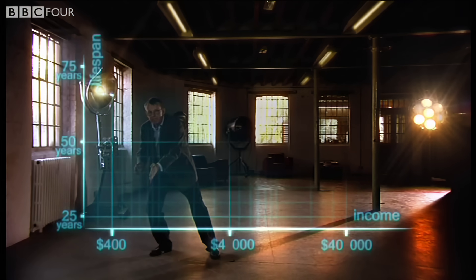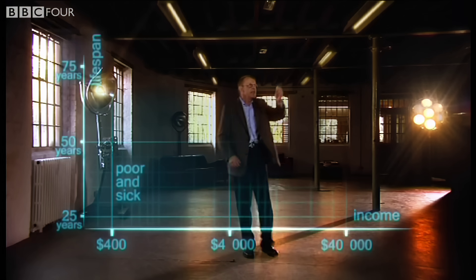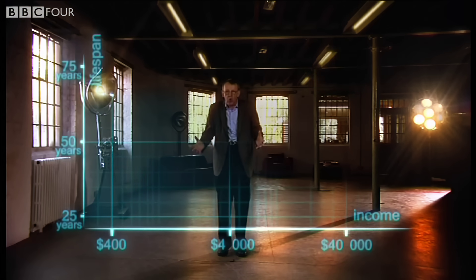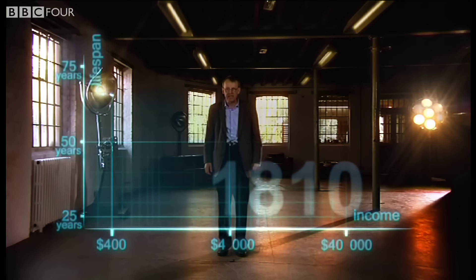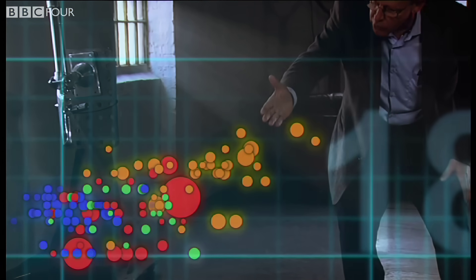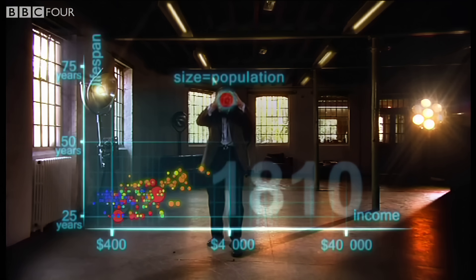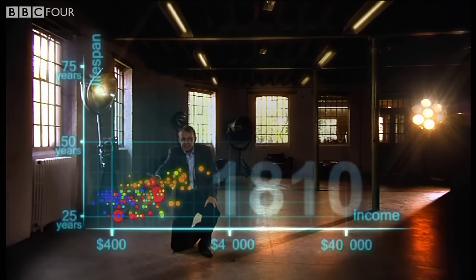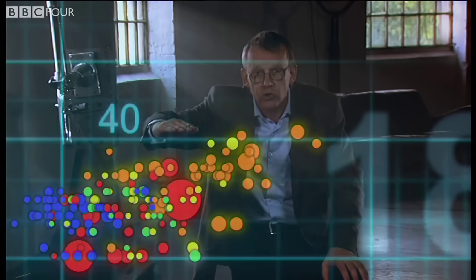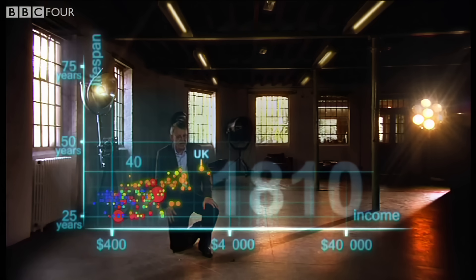So down here is poor and sick, and up here is rich and healthy. Now I'm going to show you the world 200 years ago in 1810. Here come all the countries — Europe brown, Asia red, Middle East green, Africa south of Sahara blue, and the Americas yellow. The size of the country bubble shows the size of the population. And in 1810 it was pretty crowded down there — all countries were sick and poor. Life expectancy was below 40 in all countries, and only the UK and the Netherlands were slightly better off, but not much.